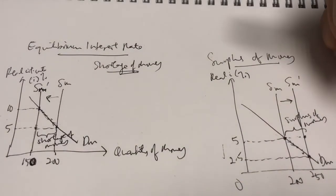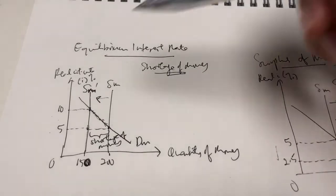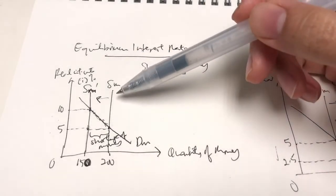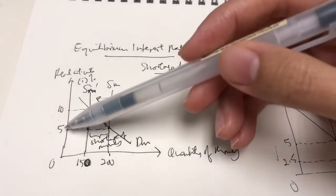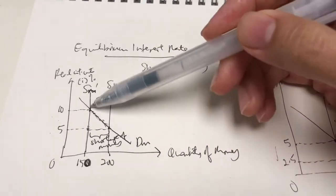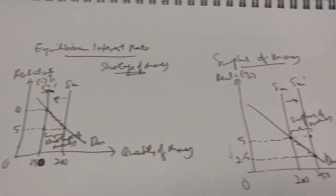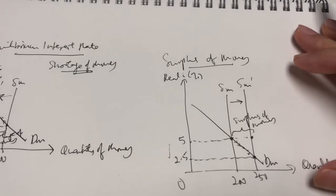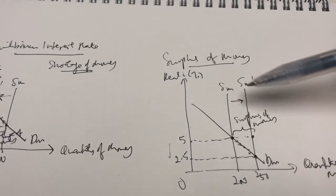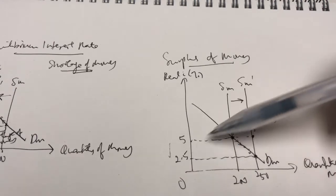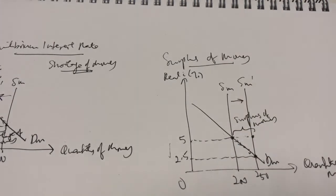Let's recap: when there's a shortage of money, the supply of money shifts to the left and as a result the equilibrium interest rate will increase due to the shortage of money. And when the supply of money shifts to the right, the equilibrium interest rate will fall due to the surplus of money.